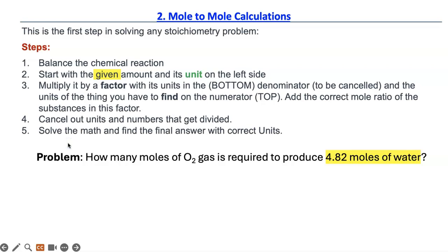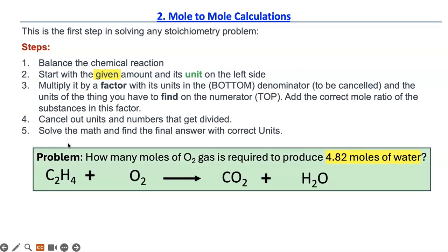And here is our problem. And here is our equation. So, it is asking how many moles of O₂ gas is required to produce 4.82 moles of water here. So, it's between these two things. First thing you do is balance the reaction in step one.